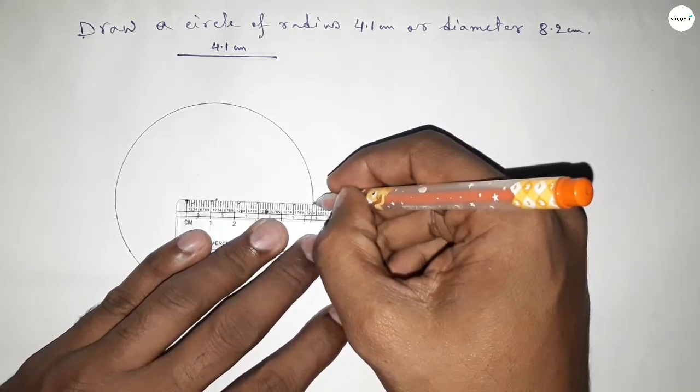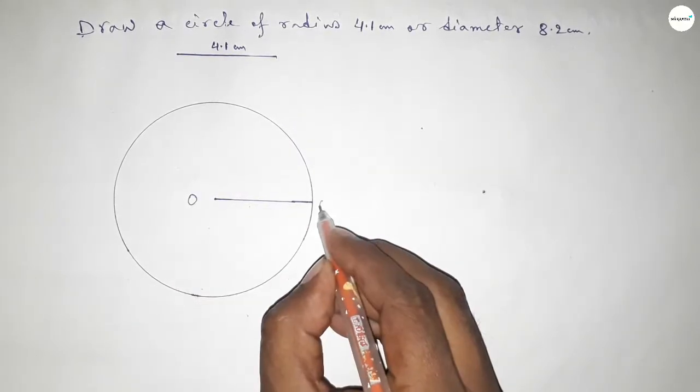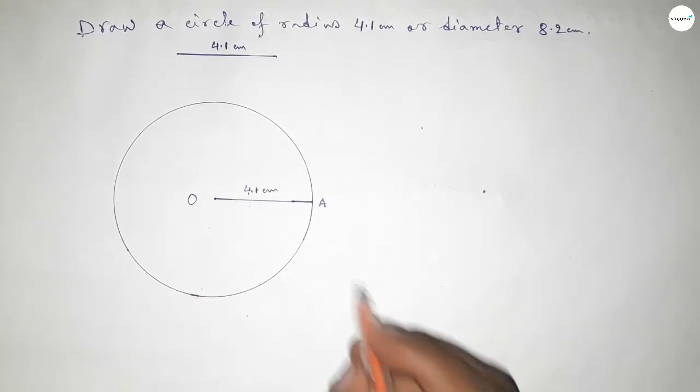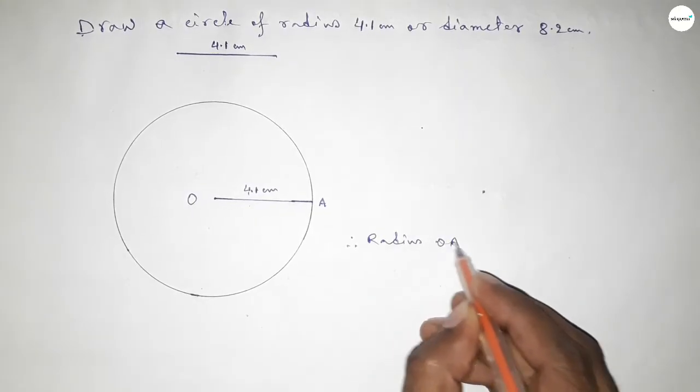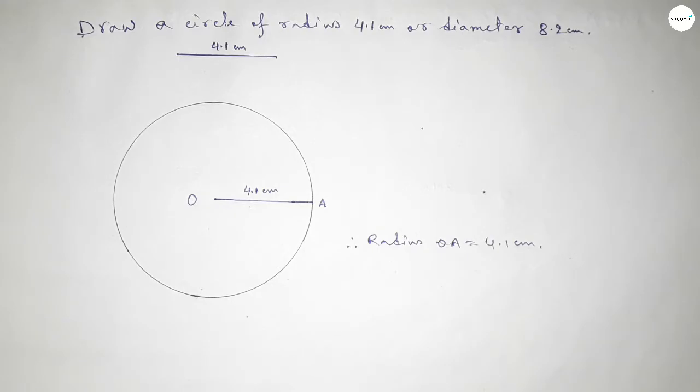Now joining this one and taking here the radius O, and here a point A. So radius OA equals 4.1 centimeter. That's all, thanks for watching. If this video is helpful, then share it.